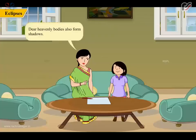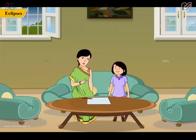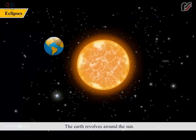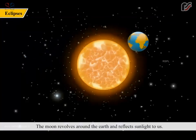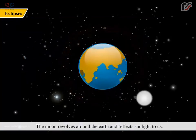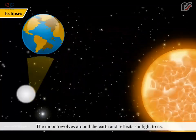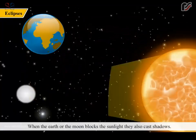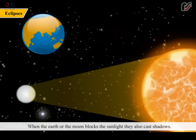Dear, heavenly bodies also form shadows. How is it, Mom? Please explain it to me. The earth revolves around the sun. The moon revolves around the earth and reflects sunlight to us. When the earth or the moon blocks the sunlight, they also cast shadows.